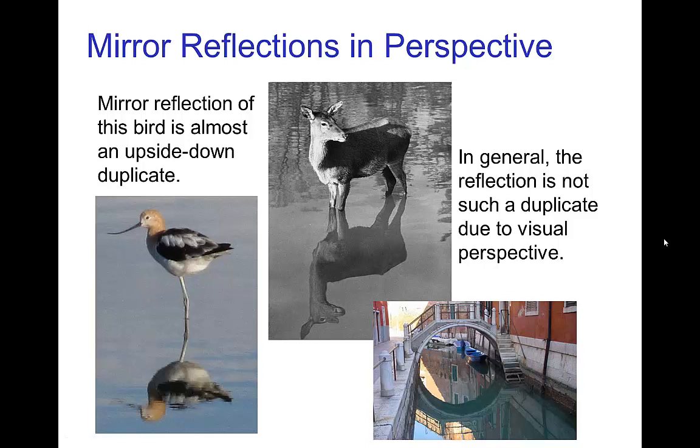Now mirror reflections, you should realize that they are not exact duplicates. Of course there is a visual perspective that has to be accounted for. So this first image of the bird is nearly a top-down duplicate, but we see with this deer in the water that by perspective we can see underneath the deer. Similarly we can see underneath the bridge in its mirror reflection.